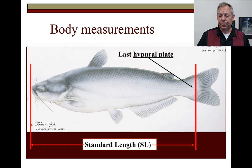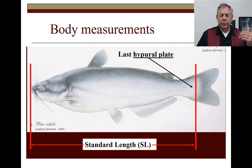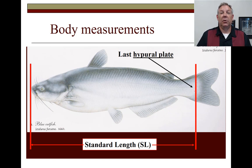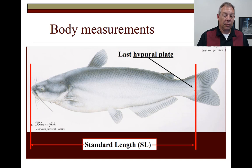The most commonly used measurement, especially in ichthyology and the keys, is standard length. Standard length goes from the tip of the nose to the last hypural plate — the last element of the skeleton. If you slightly bend the tail, you can easily see where the skeleton ends, and that's what you use for standard length. It can be used with less variability since you don't have to worry about whether the tail is eroded or not.